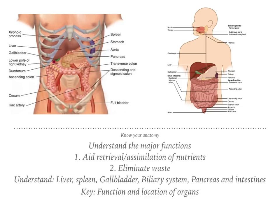The GI tract is comprised of multiple organs and has two major functions: one is to aid in the retrieval and assimilation of nutrients, and two is the elimination of waste. Food breakdown initially occurs in the mouth through salivary amylase, then passes into the stomach and is broken down further with gastric acid. As food enters the small intestine, it meets bile from the liver and pancreatic enzymes from the pancreas, which help with breakdown of carbohydrates, protein, fat, and pH regulation. Bile assists in breakdown of fats and lipids, and vitamin B12 is absorbed in the ileum.